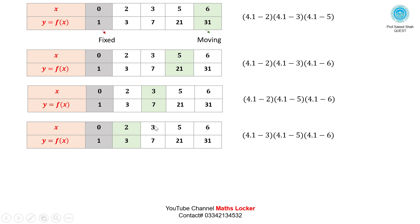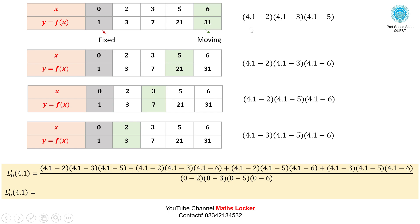For the denominator of L0', with 0 fixed, we compute 0 minus 2, 0 minus 3, 0 minus 5, and 0 minus 6. Simplifying gives us the value of L0' at x = 4.1.